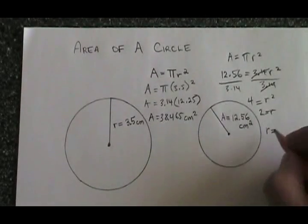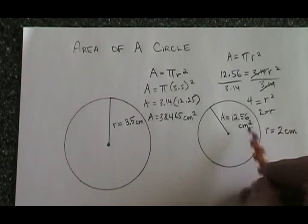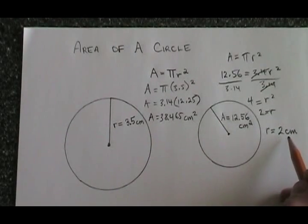Therefore, the radius is equal to 2 centimeters. Because the area was given in centimeters squared, the unit of distance has to be centimeters.